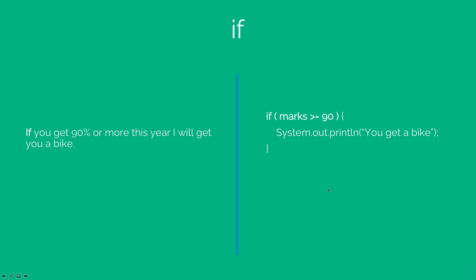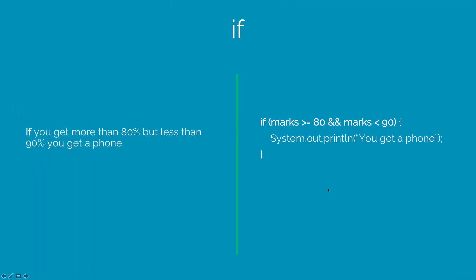Same way, I can make more complex conditions. Let's say you want to check if marks are more than 80% but less than 90%. In this case, I will combine using the AND operator. So I have the same if condition and I have the block here, inside which I say system.out.println. This println statement will run only if the value of marks is greater than or equals to 80 and at the same time it is less than 90.